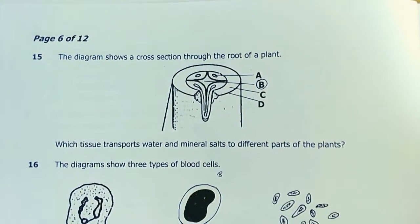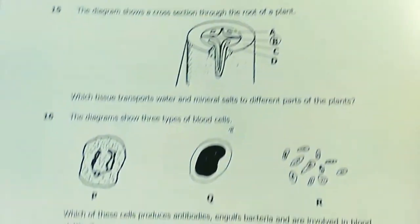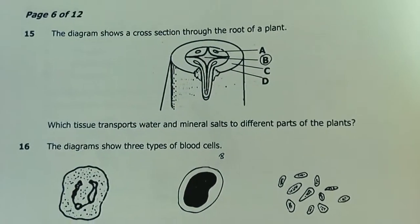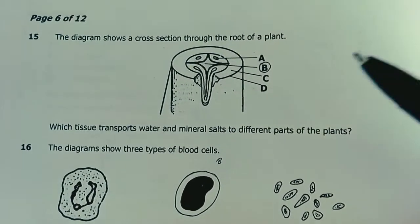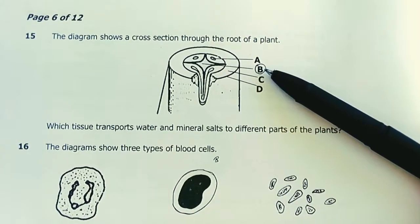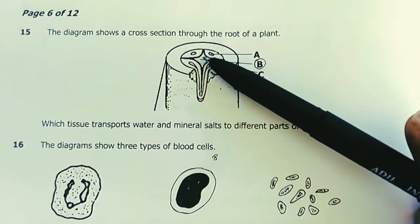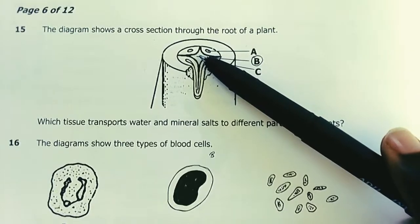Question 15. The diagram shows the cross section through the root. Which tissue transports water and mineral salts to different parts of the plant? It's B, which is our xylem. In the roots, the xylem is this central part here.